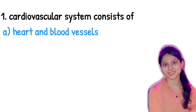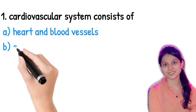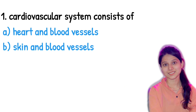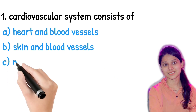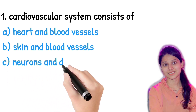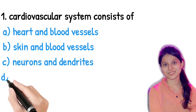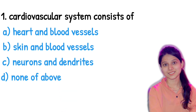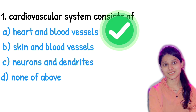The first question: cardiovascular system consists of — option one: heart and blood vessels, option two: skin and blood vessels, option three: neurons and dendrites, option four: none of the above. The right answer is heart and blood vessels. The cardiovascular system consists of heart and blood vessels.